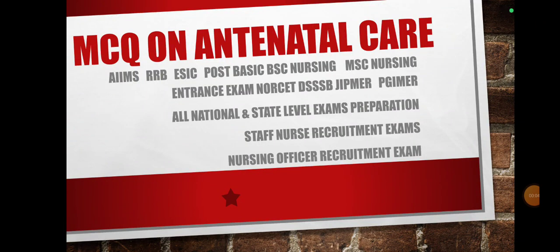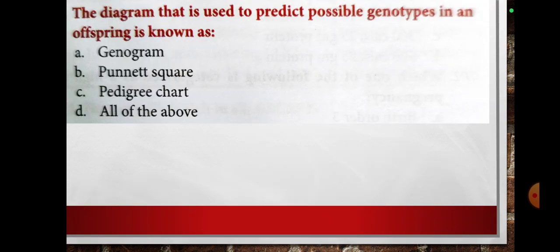Now, I will discuss the MCQ on antenatal care. The diagram that is used to predict possible genotypes in an offspring is known as: option A, genogram; option B, Punnett square; option C, pedigree chart; option D, all of the above.